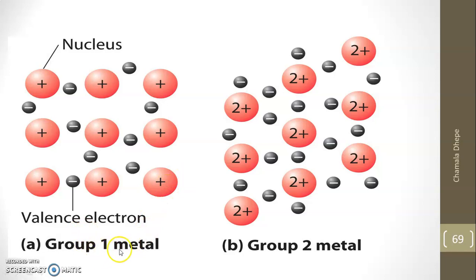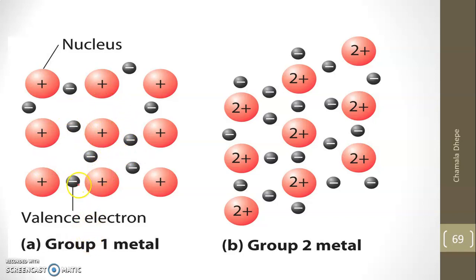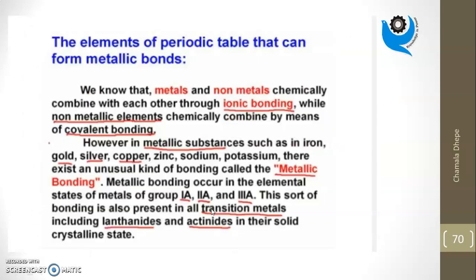In Group 1 metals from the periodic table, there is only one valence electron and this is their kernel. All the cores are systematically arranged with fixed positions, while the valence electrons are free to move anywhere — that is why they are called delocalized. For Group 2 elements, there are two positive charges on the kernel and two valence electrons that can move freely anywhere in the crystal.